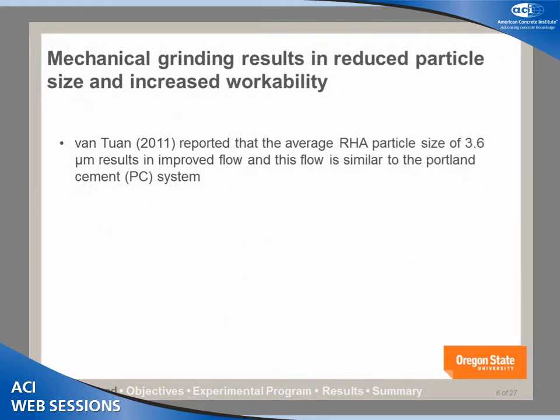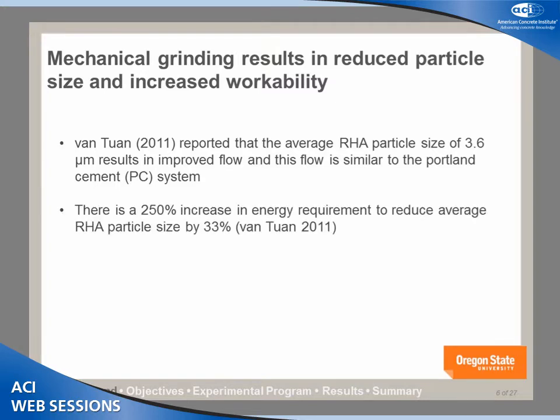Many researchers have tried mechanical grinding by reducing the particle size, which leads to increased workability. For example, Van Tour at Delft University investigated reducing the particle size of RHA to 3.6 microns, resulting in improved flow that can be similar to Portland cement. However, one important point is that to reduce the particle size by 33 percent, it increases the energy requirement by about 250 percent. So ball mill or mechanical grinding is not efficient.